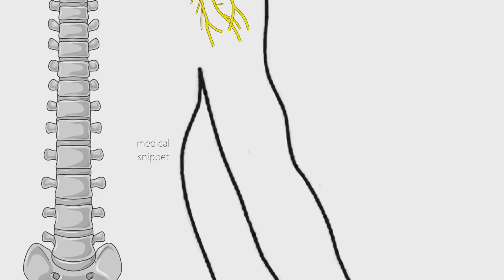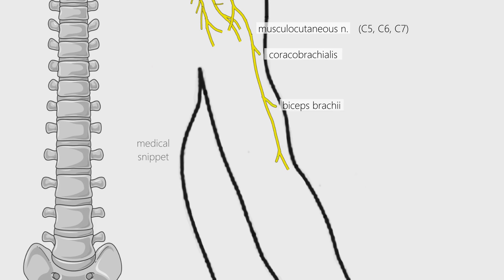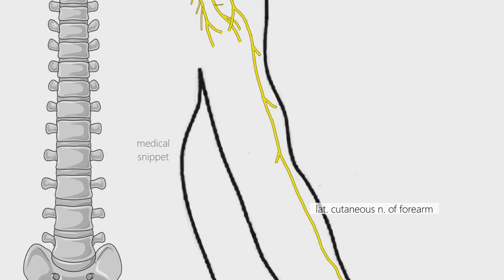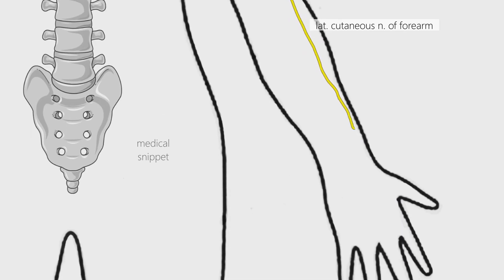The musculocutaneous nerve is a terminal branch of lateral cord, so it has C5, C6, and C7 nerve fibers. As the name suggests, it supplies both muscle and skin. As it passes down the arm, it supplies coracobrachialis, biceps brachii, and brachialis muscle. In the forearm it continues as the lateral cutaneous nerve of the forearm, which innervates the skin of the lateral region of the forearm.